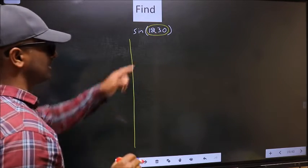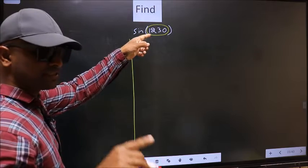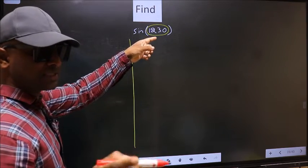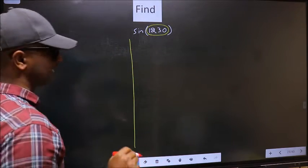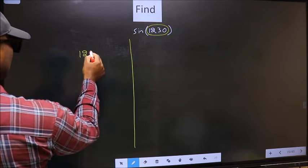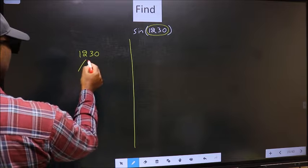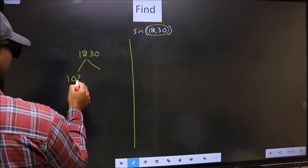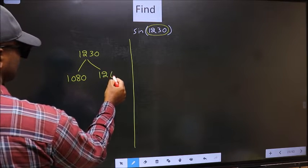Now you should check 1230 lies between which two multiples of 180. What I mean is, 1230 lies between 1080 and 1260.